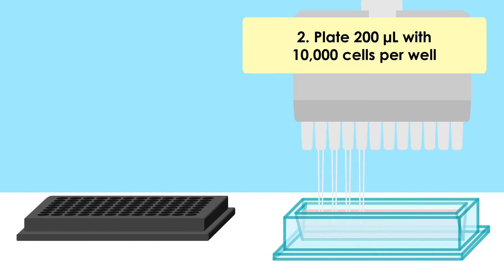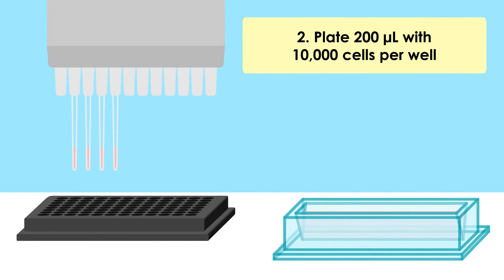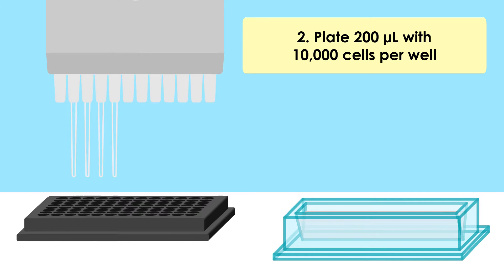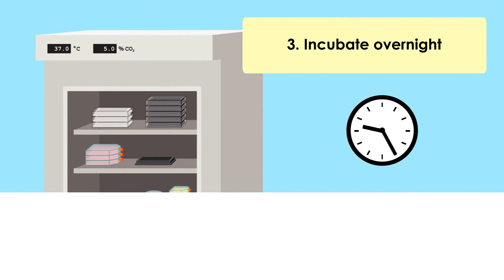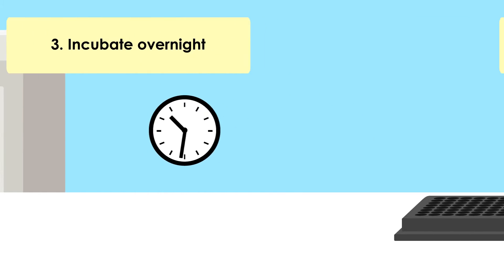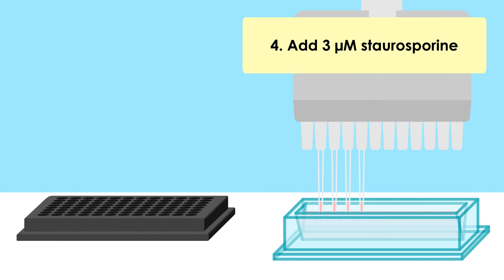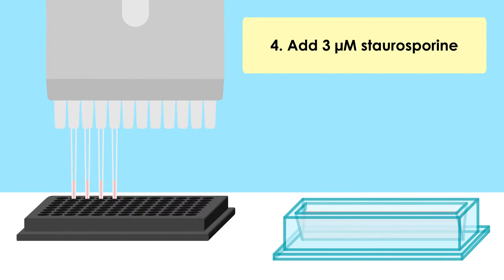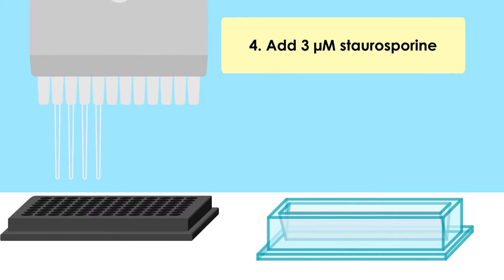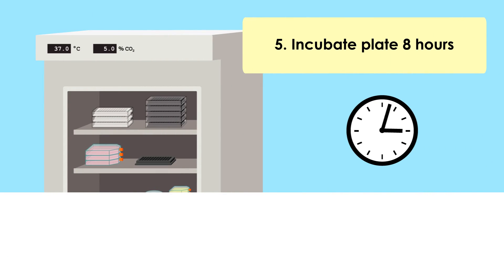Based on the measured concentration of your cells per well, plate 10,000 cells in a volume of 200 microliters and allow the cells to incubate overnight. The next day, add 3-micromolar staurosporine to induce apoptosis and allow the cells to incubate for the next 8 hours.